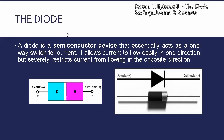Ang main application ng diode ay maging switch. So it can be switched on — yung closed switch — or it can be switched off — yung tinatawag na open switch. And then this diode consists of two layers of semiconductor: yung P layer or yung P-type material, and then yung N layer or N-type material. Ito naman yung schematic diagram ng diode — yung terminal niya, positive terminal, which is the anode.